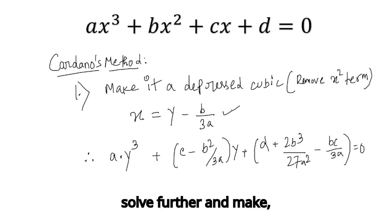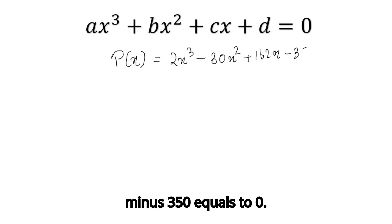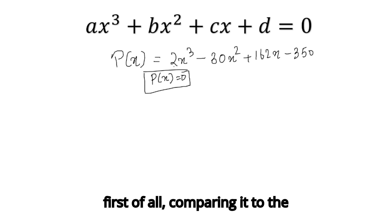Using this depressed cubic, we can solve further and find our values of x which satisfy the equation. Once we get one real value, then by polynomial division we can easily find other values. For this video, I'm going to take an example. Let's take p(x) = 2x³ - 30x² + 162x - 350 = 0. Comparing it to the standard form, we see that a = 2, b = -30, c = 162, and d = -350.